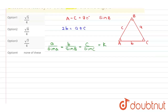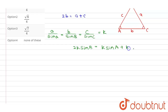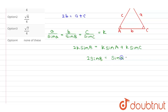From the sine rule, b equals k·sin B. Substituting into the AP condition, 2k·sin B equals k·sin A plus k·sin C. Cancelling k, we get 2·sin B equals sin A plus sin C.